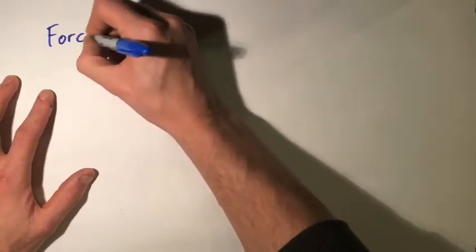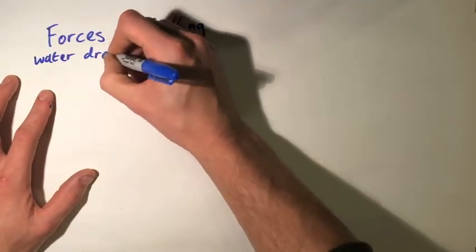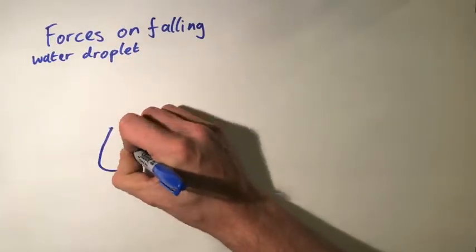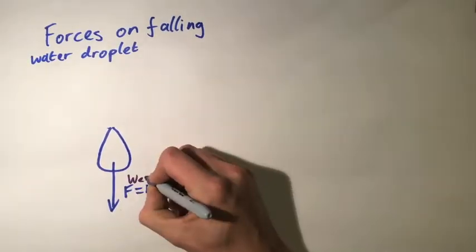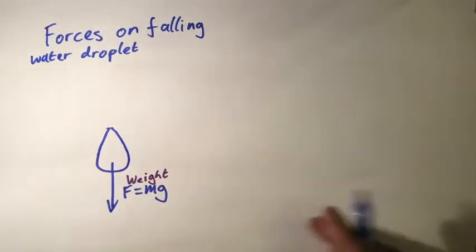So let's take a look at the forces on the water droplets as they're falling, because it's not as simple as it first seems. The first force we need to consider is the downward force from the droplet due to gravity, otherwise known as its weight.